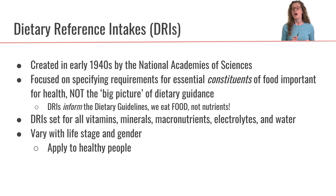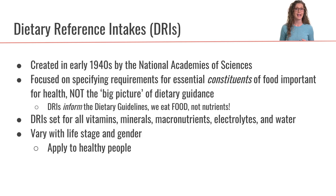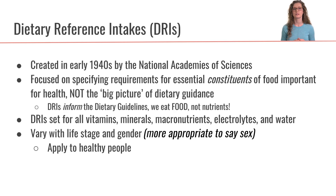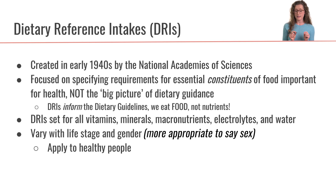DRIs cover specific nutrients like vitamin C, vitamin A, and carbohydrates — not the whole dietary picture. Of course, we eat food, not nutrients. The DRIs have been set for all vitamins, minerals, macronutrients, electrolytes, and water. Very importantly, the DRIs vary with life stage and with gender, so there will be different values for these nutrients depending on what life stage you're at and what gender you are. They apply to healthy people — nutrient needs may be different if you have a particular disease, but these DRIs are all made for healthy people.